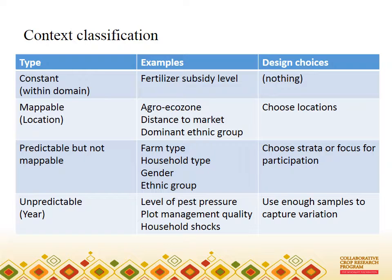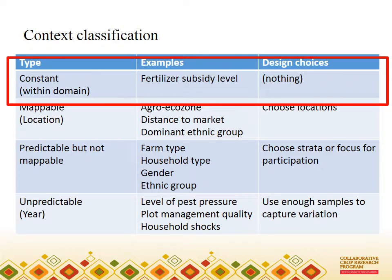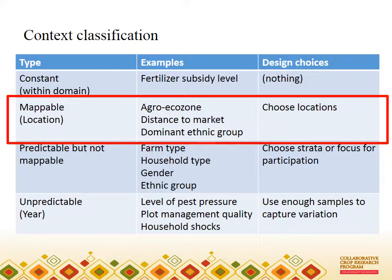If you think through the characteristics of context factors that interact with options, they fall into four groups. First, there are those that are important for how the options function, but don't vary within the project domain — hence we have no direct way of studying how they interact with options. Then there are those that vary systematically by location. I call them mappable, because you can point to a place on a map and predict what value they will have there. Distance to market, used in the example, is one of these — factors we can use to choose locations when designing a multi-environment trial.